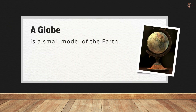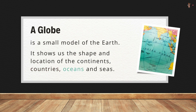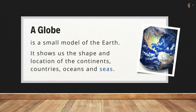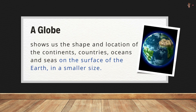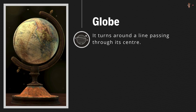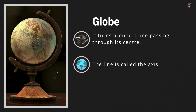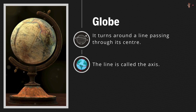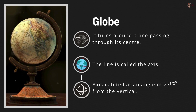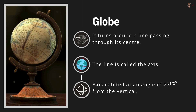A globe is a small model of the earth. It shows us the shape and location of the continents, countries, oceans, and seas as they are on the surface of the earth, but in a smaller size. A globe, like the earth, turns around a line passing through its center — this line is called the axis. The axis is not straight; it is tilted, just like the earth's axis, at an angle of 23 and a half degrees from the vertical.